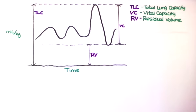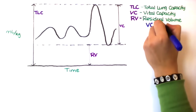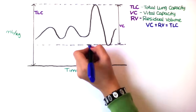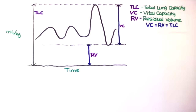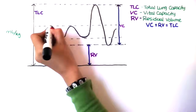Vital capacity plus residual volume equals total lung capacity. Tidal volume is the amount of gas an individual inspires or expires during normal quiet breathing.